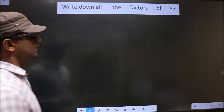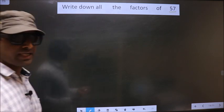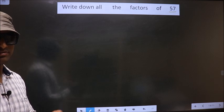Write down all the factors of 57. To write all factors of 57, first we should do the prime factorization of 57.